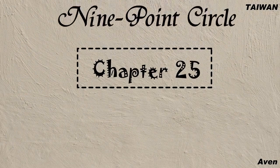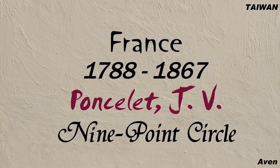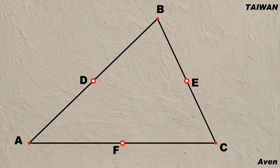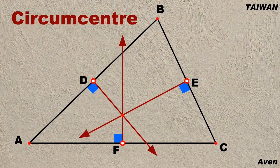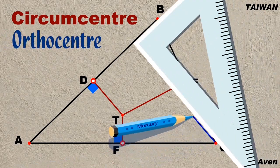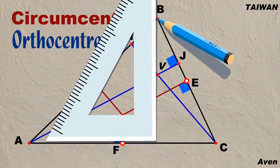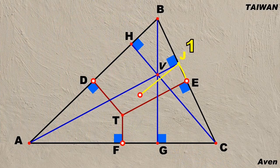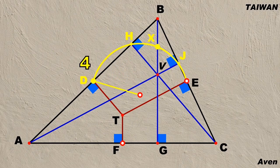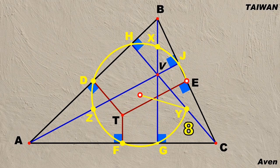What is the nine-point circle? The French mathematician Poncelet discovered the circle. If we construct the three mediators of the three sides to find the circumcenter of triangle ABC, and we draw the three altitudes of the triangle to find the orthocenter point V, we can find a circle. The circle meets the three sides and the three altitudes of triangle ABC at nine special points.